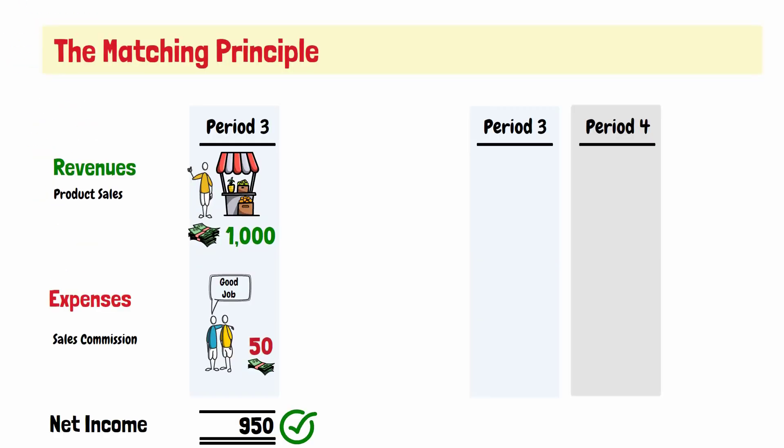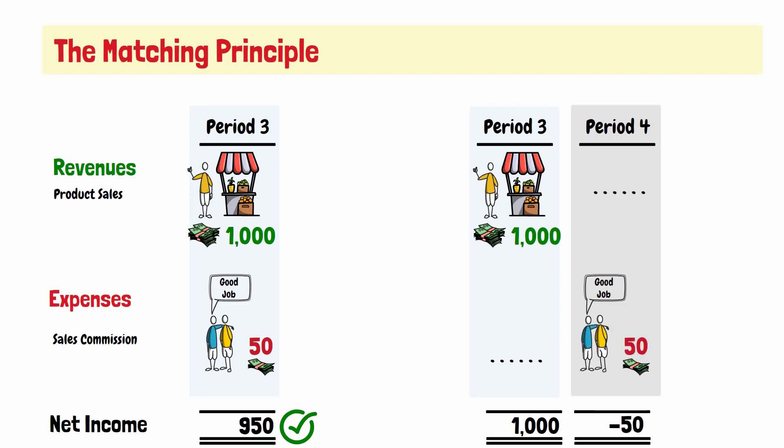If the sales revenue for the product were recorded in an accounting period, and the sales commission for selling that product were recorded in a different period, then the income statement will show an overstated net income for this period and an understated net income for that period.